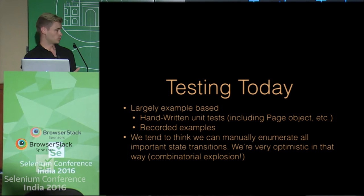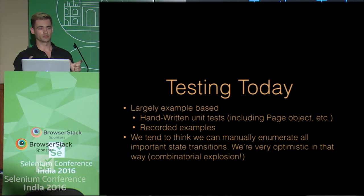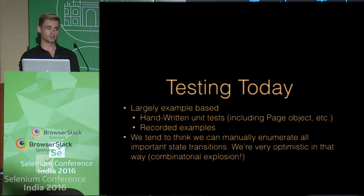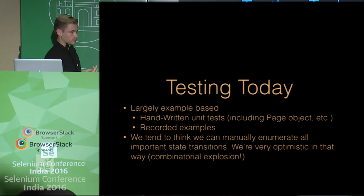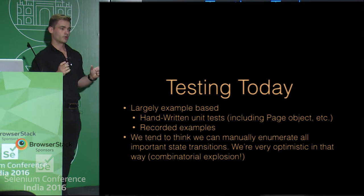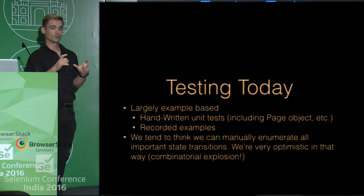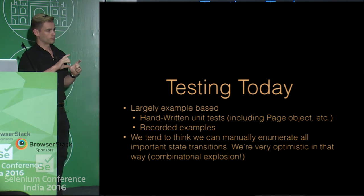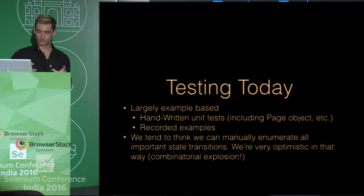In fact, we're very optimistic because there's a combinatorial explosion between features. So if you have one feature, you can write a couple of tests, and that's pretty easy. If you have two features, the interaction between them means you have to write a lot more tests. And with three features, the number of tests just starts to explode.